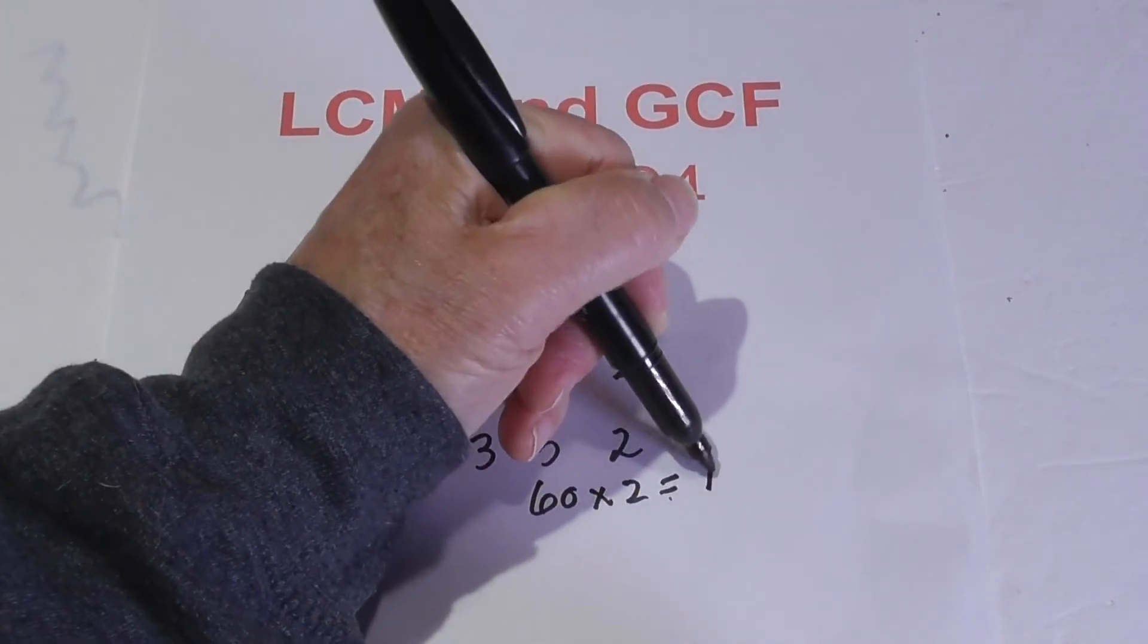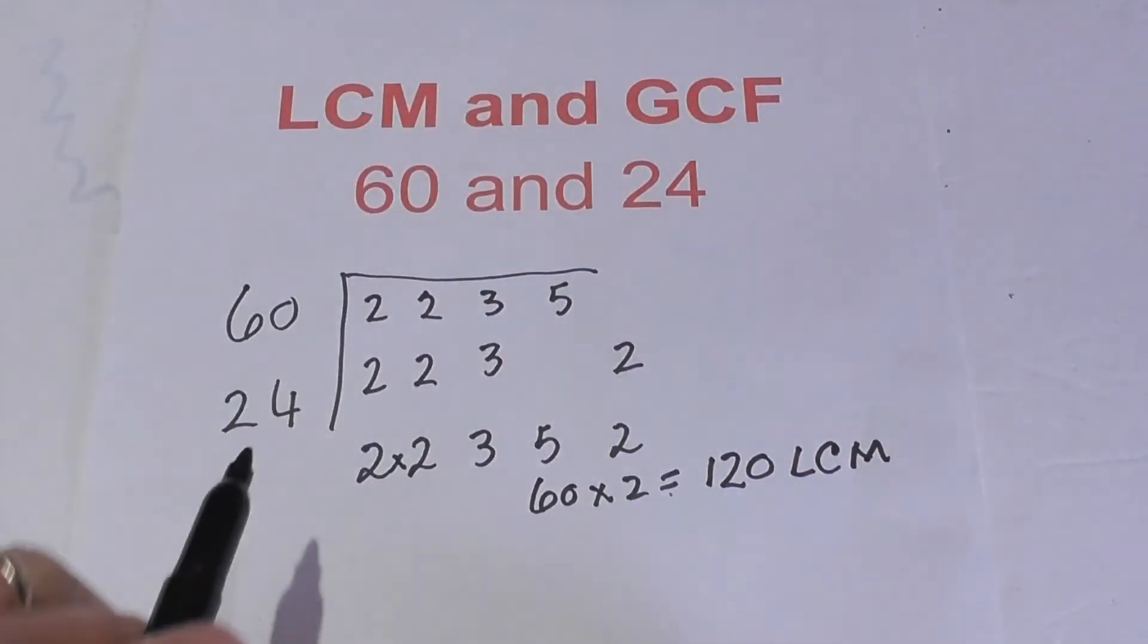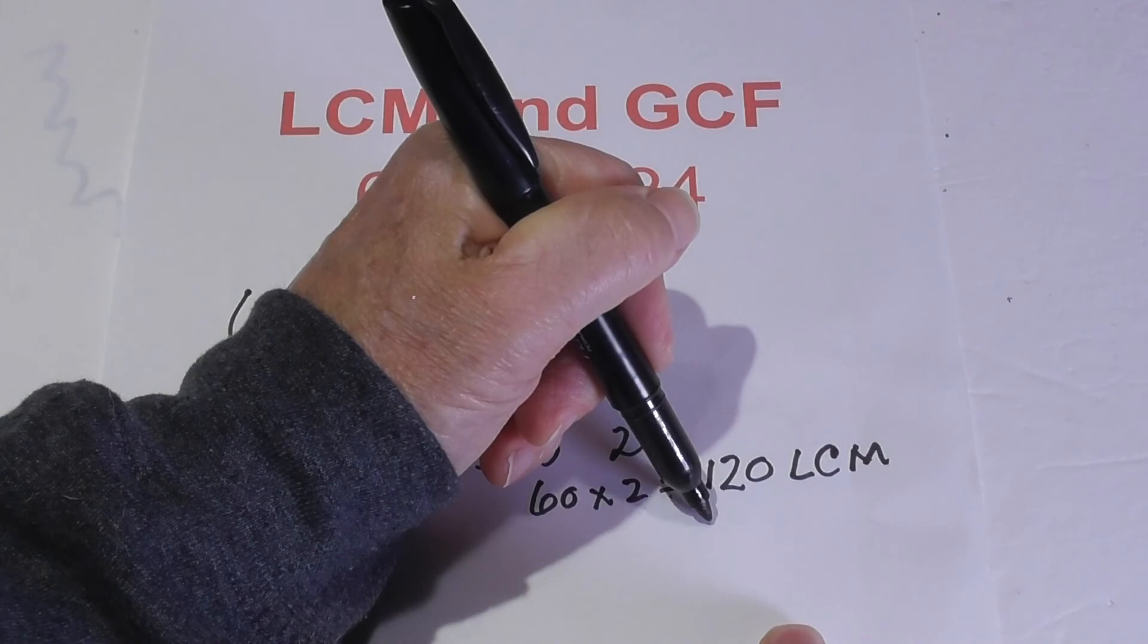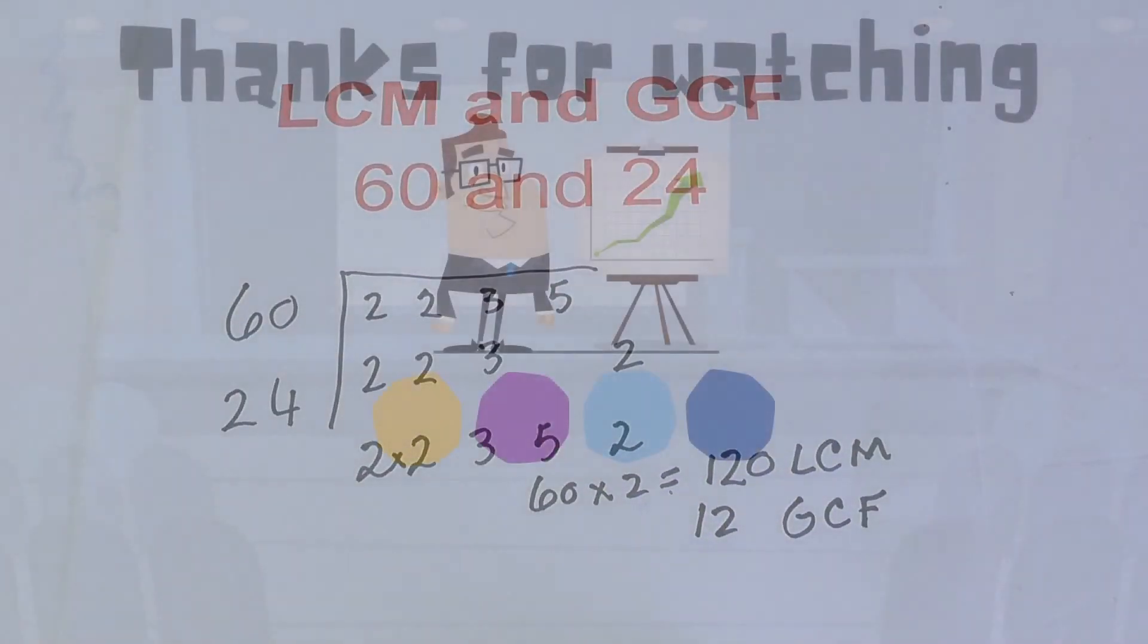So 120 is your LCM. In summary, the LCM is 120 and 12 is your GCF.